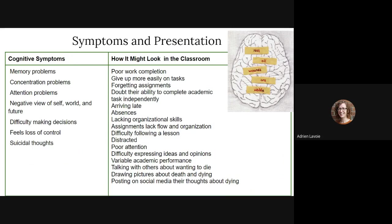In the classroom, cognitive symptoms might look like poor work completion, giving up on tasks more easily, forgetting assignments altogether, doubting their ability to complete work without help, arriving late or not arriving at all, lacking organizational skills, and disorganized or messy assignments. A person might have difficulty following the lesson or keeping up with the pace, being distracted, struggling to pay attention, and difficulty expressing their ideas and opinions whether written or verbal. Academic performance may go up and down quite a range. You might also see students talking about wanting to die, drawing pictures about death, or posting dark thoughts on social media.